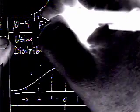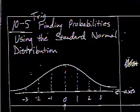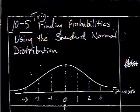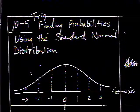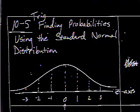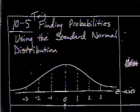Okay, we're in section 10.5 of Trig, finding probabilities using the standard normal distribution. Keep in mind that's the parent normal distribution, but it's been modified with those two scale changes we talked about in the last section.